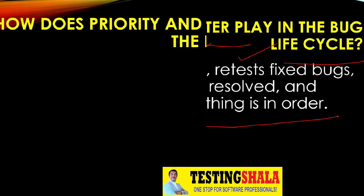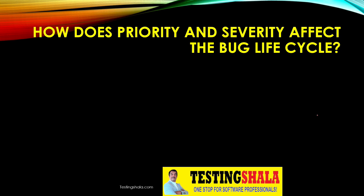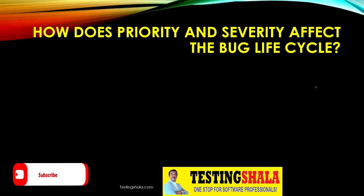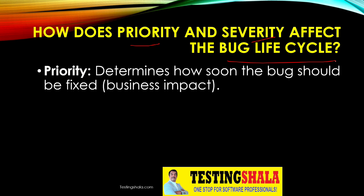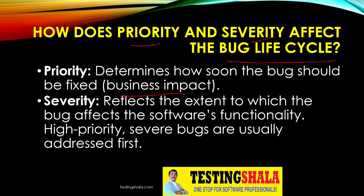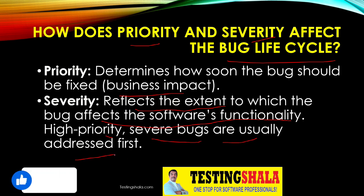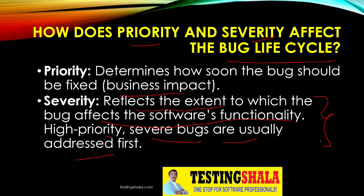How do priority and severity affect the bug life cycle? Priority determines how soon a bug should be fixed based on business impact. Severity reflects the extent to which the bug affects the software functionality. High priority, high severity bugs are addressed first because they impact critical functionality and have the greatest business impact if not fixed. Priority and severity are identified based on the criticality of the functionality.